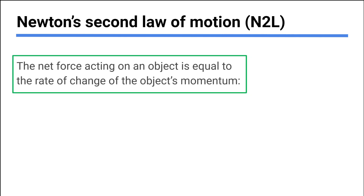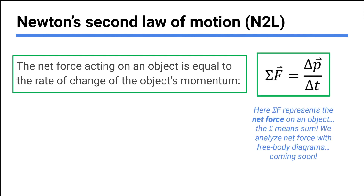The second law of motion is a tricky one. F=ma is not officially the second law, even though everybody says it is. The IB wants it stated exactly as: the net force acting on an object is equal to the rate of change of the object's momentum. So we have a change in momentum over change in time. The sigma symbol represents the net force - it's a math symbol for sum.